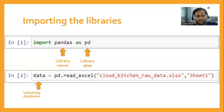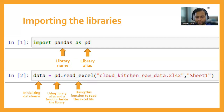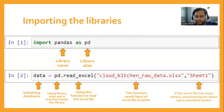So pd is the alias for pandas. Whenever you call anything from that library, we use pd instead of pandas. We use pd.read_excel() to read an Excel file into a data frame, which is like a temporary in-memory table. We mention the Excel file name — if it's in the same folder, just the name; otherwise, the full path. If there are multiple sheets, we specify the sheet name.